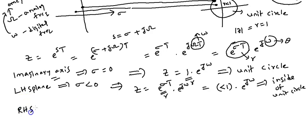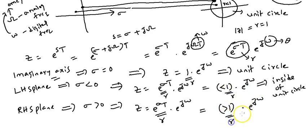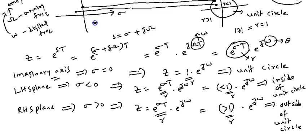Next, for the right half s-plane, σ is greater than 0 (positive). When σ is positive, the radius e^(σT) is more than 1. Radius more than 1 means the point is outside the unit circle. Therefore, the right half s-plane is equivalent to the outside of the unit circle. This is how the s-plane and z-plane are related.